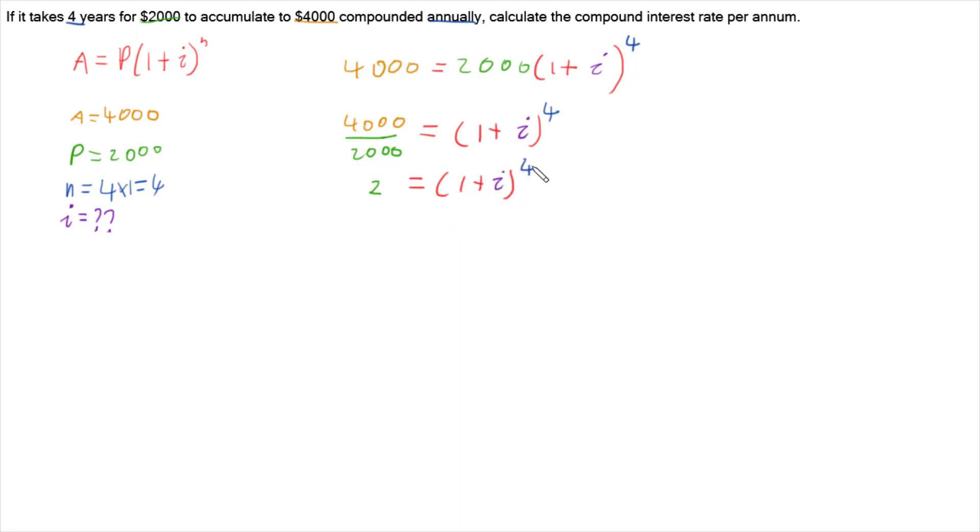So now I need to deal with this power of 4. And how I deal with this power of 4 is the opposite of raising to a power is to do a root. So I've got to do a root that matches the power of 4. So I've got to do a 4th root. So I'm going to do the 4th root of 2, which mathematically is what number multiplied by itself 4 times gives us 2. But we can just chuck that into our calculator to get our answer. And that's going to be 1 plus little i.